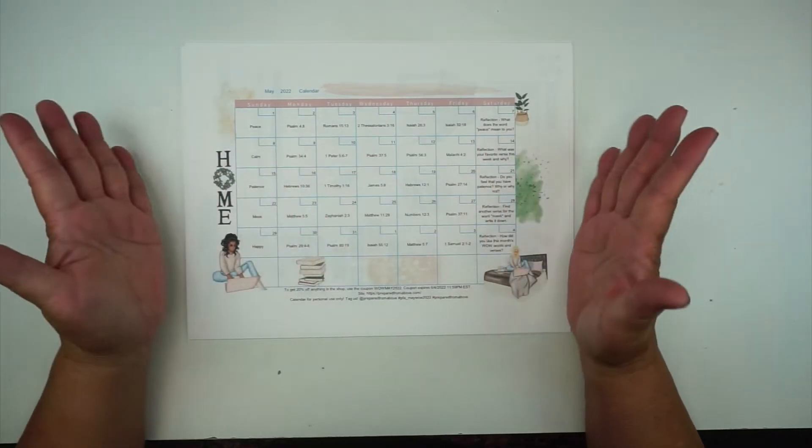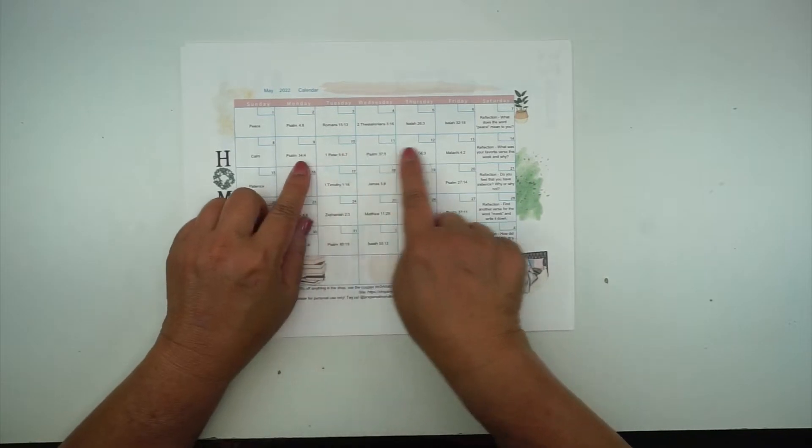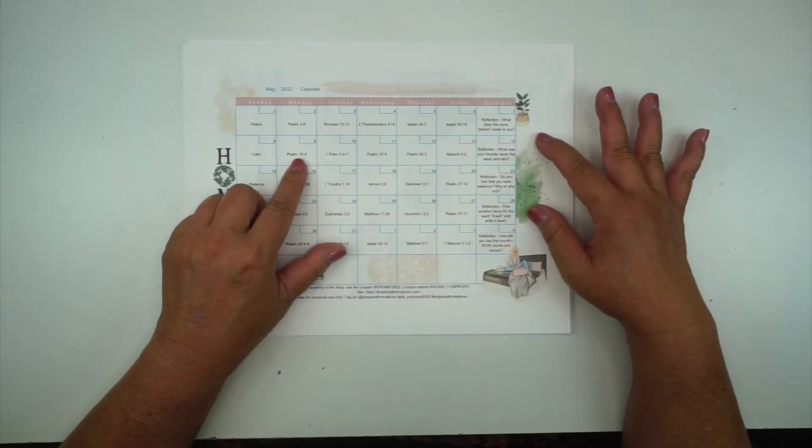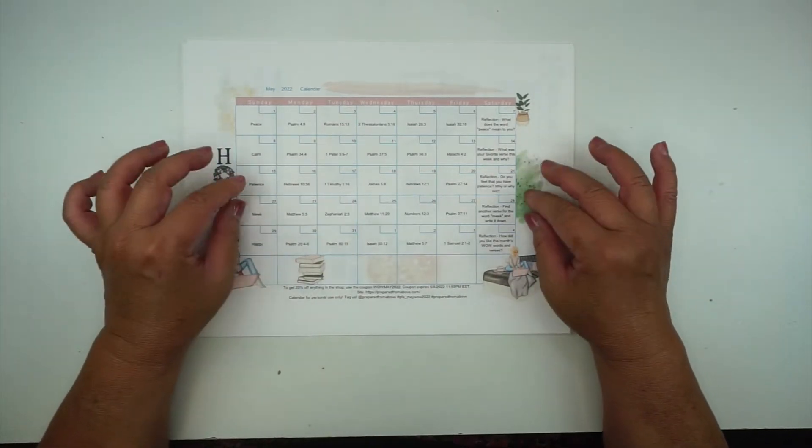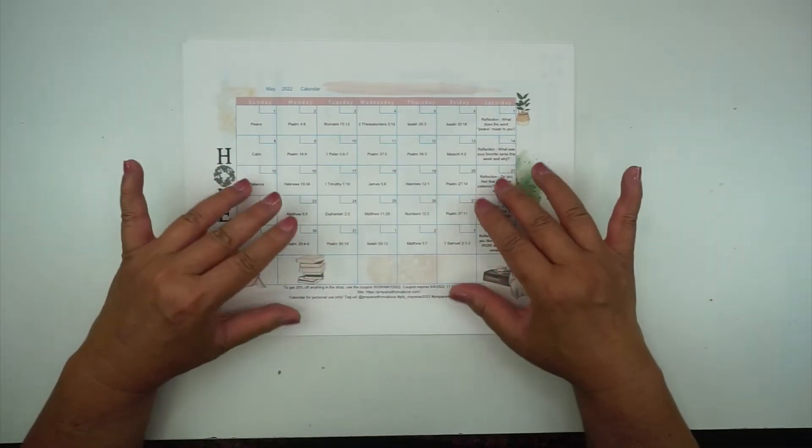So what you could do is you could do your scripture writing throughout the week and then on the weekend you can journal your thoughts in a Bible or a traveler's notebook or however you want to work through them.